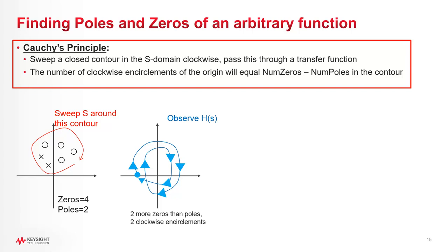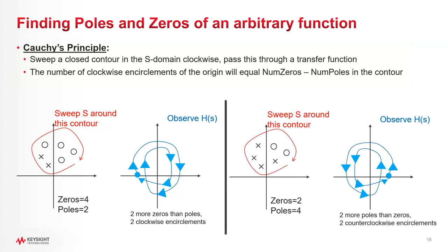Picture is worth a thousand words here. Take a contour inside our four zeros and two poles. These are part of the transfer function. And if you pass it through the transfer function, at the output, it encircles the origin twice clockwise. And conversely, if there are more poles and zeros, of course, the encirclements are counterclockwise.